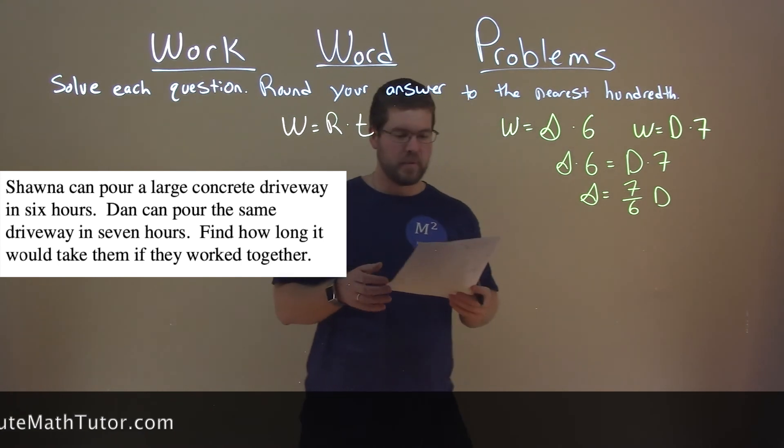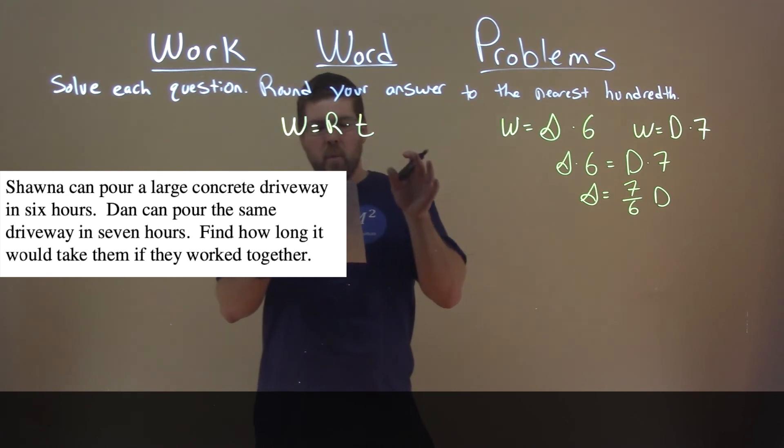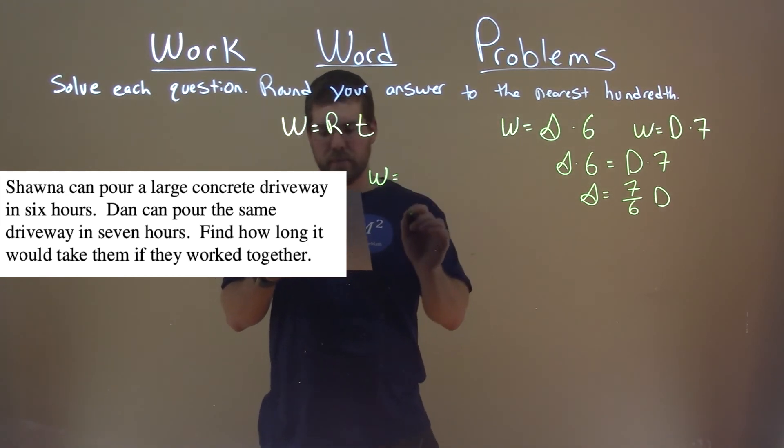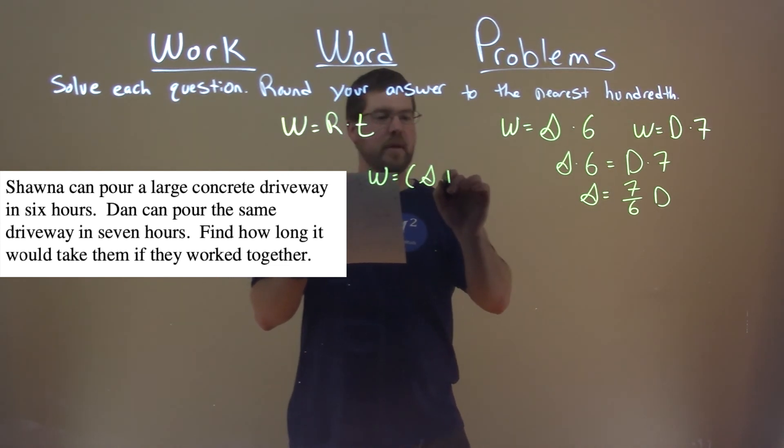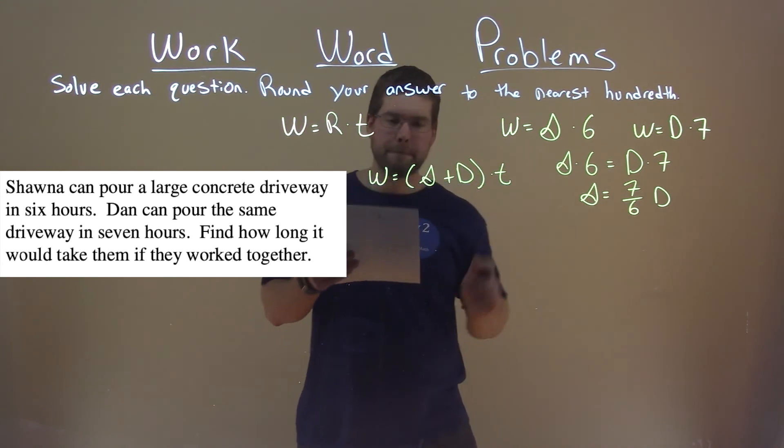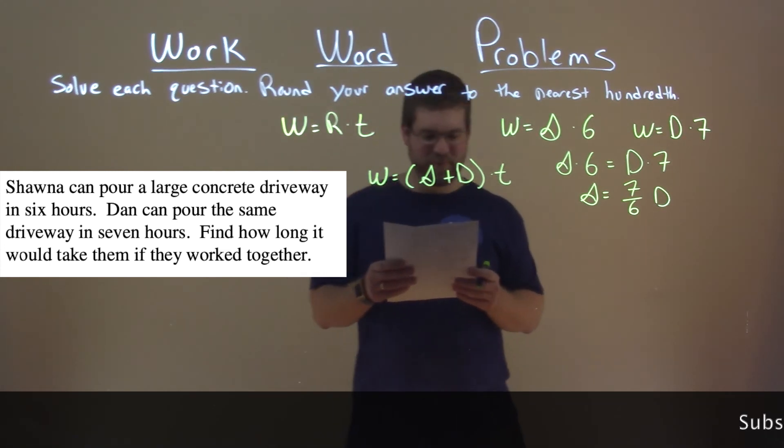So, from here, where can we go? Well, we know that they want, we want to find out really, what it would be like if they worked together. So, that same job, W, is equal to Shauna's work rate plus Dan's work rate times time. And it should be a faster time.